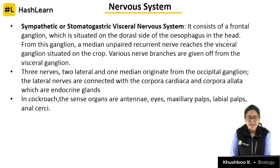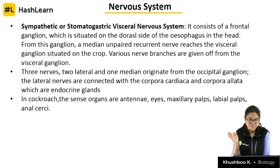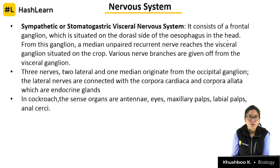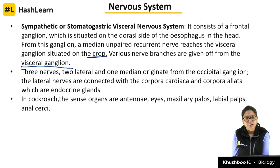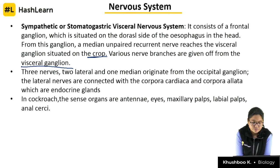The visceral nervous system consists of a frontal ganglion situated on the dorsal side of the esophagus. From this ganglion, a median unpaired recurrent nerve reaches the visceral ganglion, which is situated on the crop. Various nerve branches are given off from the visceral ganglion. Three nerves — two lateral and one median — originate from the occipital ganglion, and the lateral nerves are connected with the corpora cardiaca.